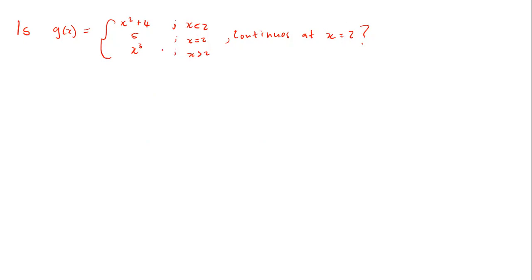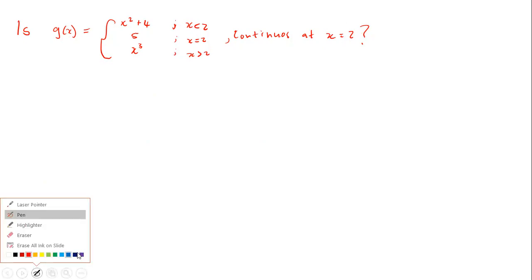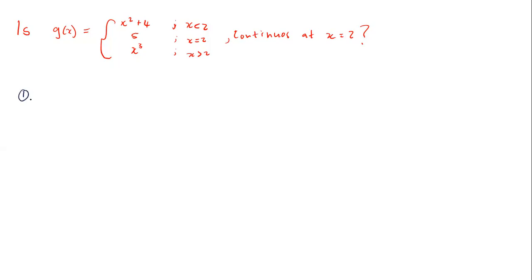To answer this question, there are three conditions that need to be satisfied. The first condition is that g(2) must be defined — that is, substituting x = 2 into g(x) must yield a numerical value.